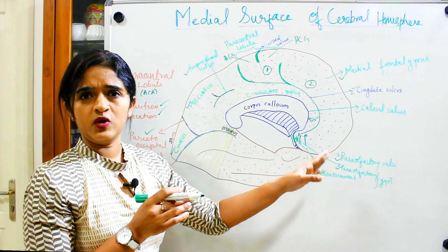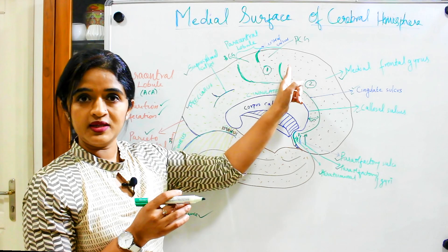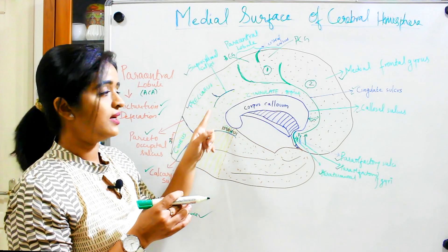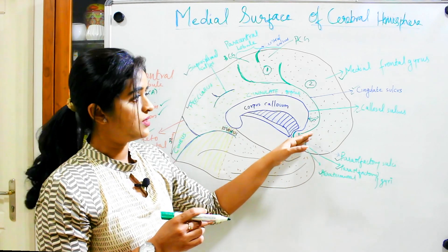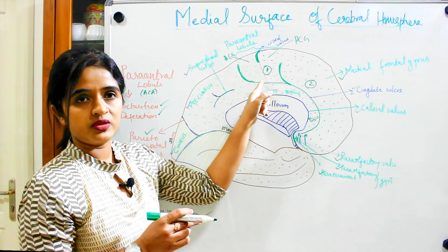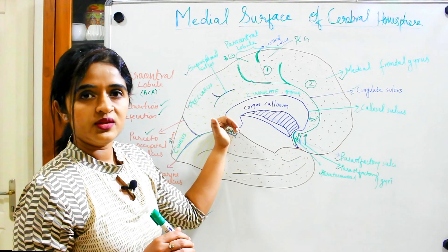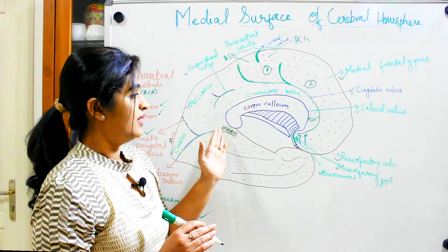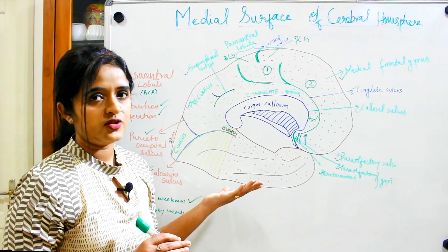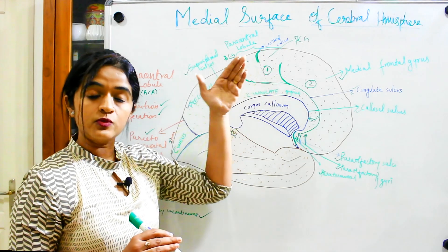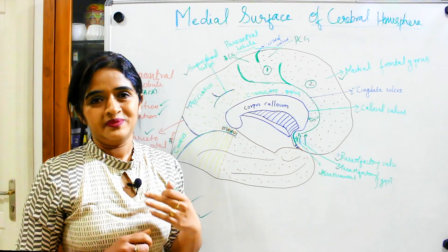To summarize: the important sulci are the anterior and posterior para-olfactory sulci, the callosal sulcus, the cingulate sulcus with its two upturned limbs, the suprasplenial sulcus, the calcarine sulcus, and the parieto-occipital sulcus. The different gyri are the paraterminal gyrus, the para-olfactory gyrus, the medial frontal gyrus, the paracentral lobule region, the cingulate gyrus, the precuneus, and the cuneus. There is also the isthmus between the splenium and the calcarine sulcus. The calcarine and parieto-occipital sulci extend onto the supralateral surface, and the central sulcus extends from the supralateral surface to the medial surface.